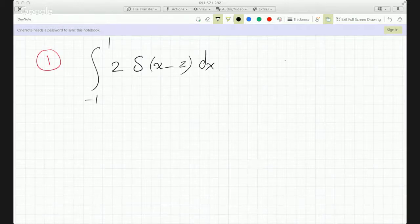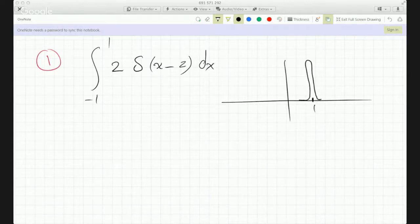This is going from minus 1 to 1, which means the Dirac delta function is now centered here. Now what do you think the answer is? This is shifted by an amount 2 and we're integrating from minus 1 to 1. You can clearly see that the Dirac delta function is outside the limits of integration. If it's outside the limits of integration, the answer is going to be zero.